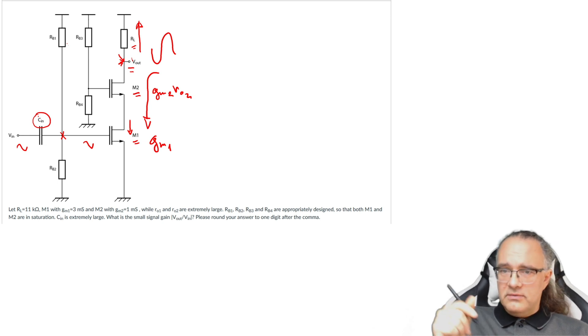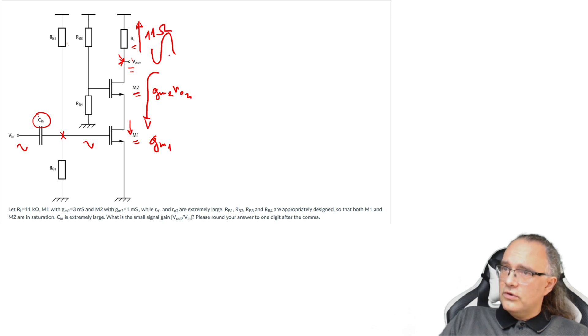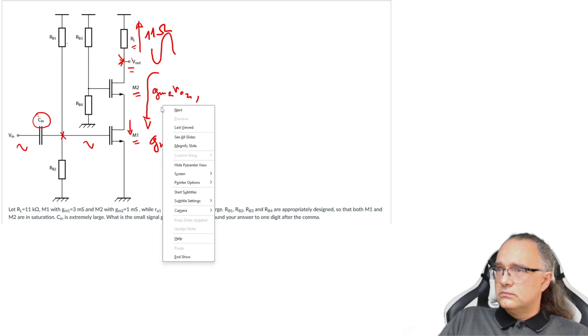But let's see now the assignment because there are also specific values. So the value of the load resistor is given 11 kΩ. So M1 is with GM1 equal to 3 mS and M2 has GM2 equal to 1 mS. All right.